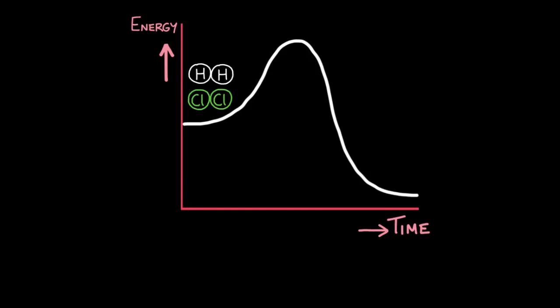To understand what happens in chemical reactions, it really helps by using this graph. On the x-axis we have time and energy on the y-axis. Let's say I'm starting off with hydrogen and chlorine, and I want them to react to form two molecules of hydrogen chloride.